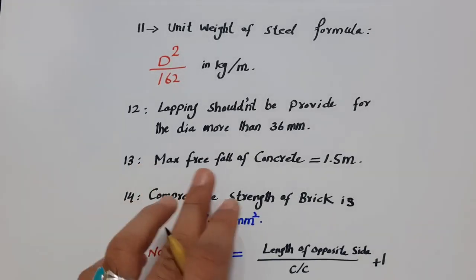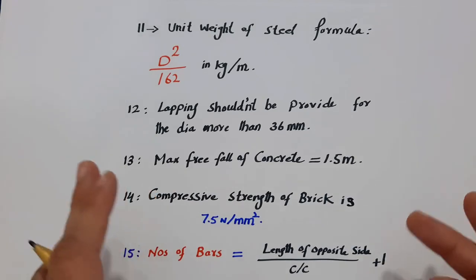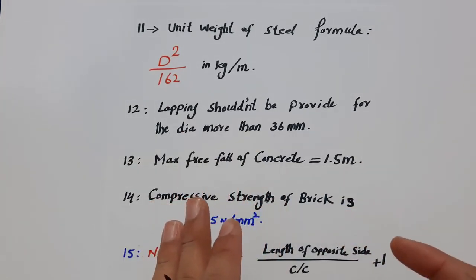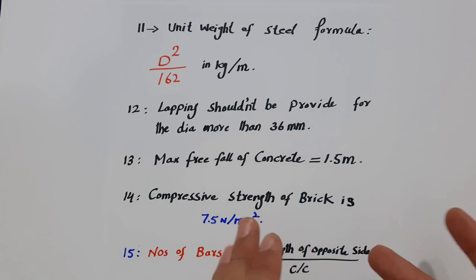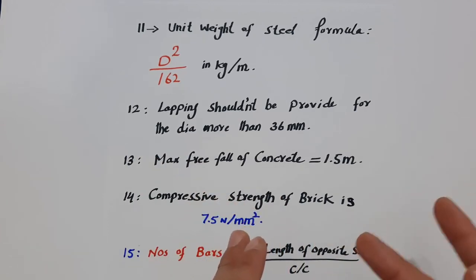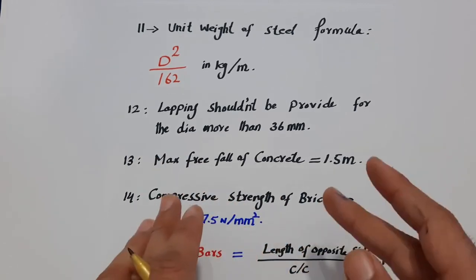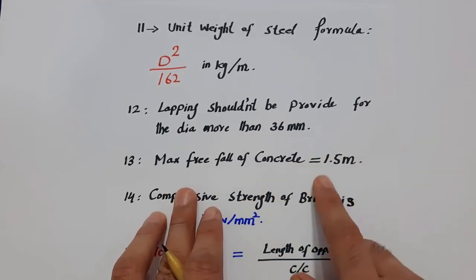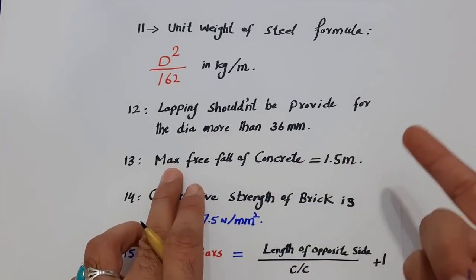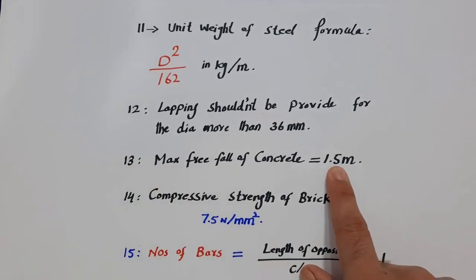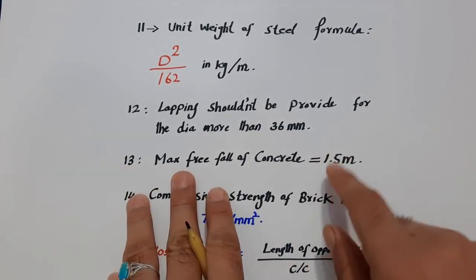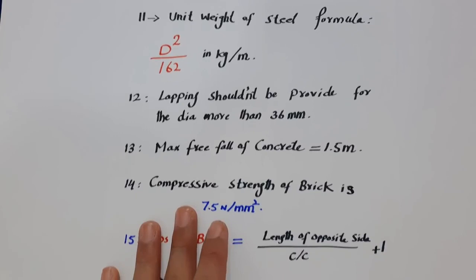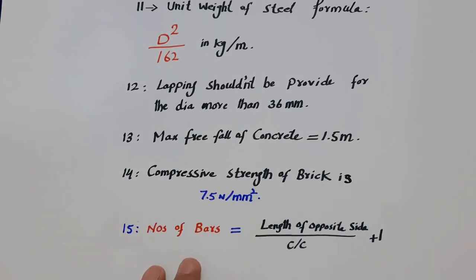The thirteenth one is the maximum free-fall of concrete. When pouring concrete into a slab or any RCC member, the height of concrete free-fall should not be more than 1.5 meters. If it exceeds this, it will cause bleeding, segregation, and other problems.